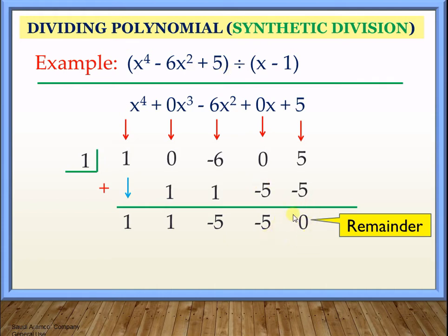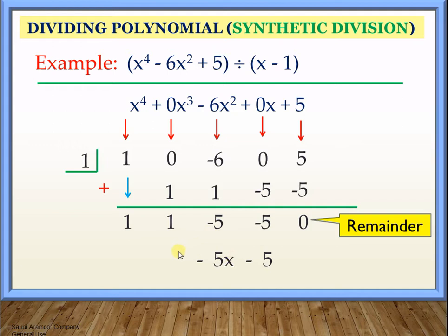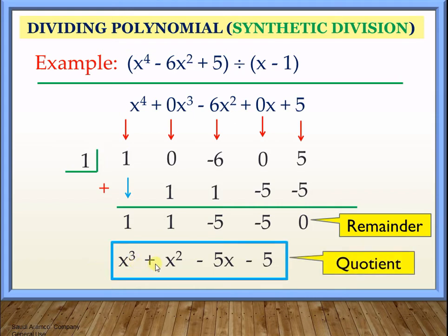Again, the last number here is always the remainder. Now let's write the quotient. The x should be decreasing from right to left. So the first one has no variable: that is minus 5. This one should have an x: minus 5x. The next should be 1x squared — since we don't copy the 1, we just put x squared. And the last one will have 1x cubed, which is the same as x cubed. So our quotient is x cubed plus x squared minus 5x minus 5.